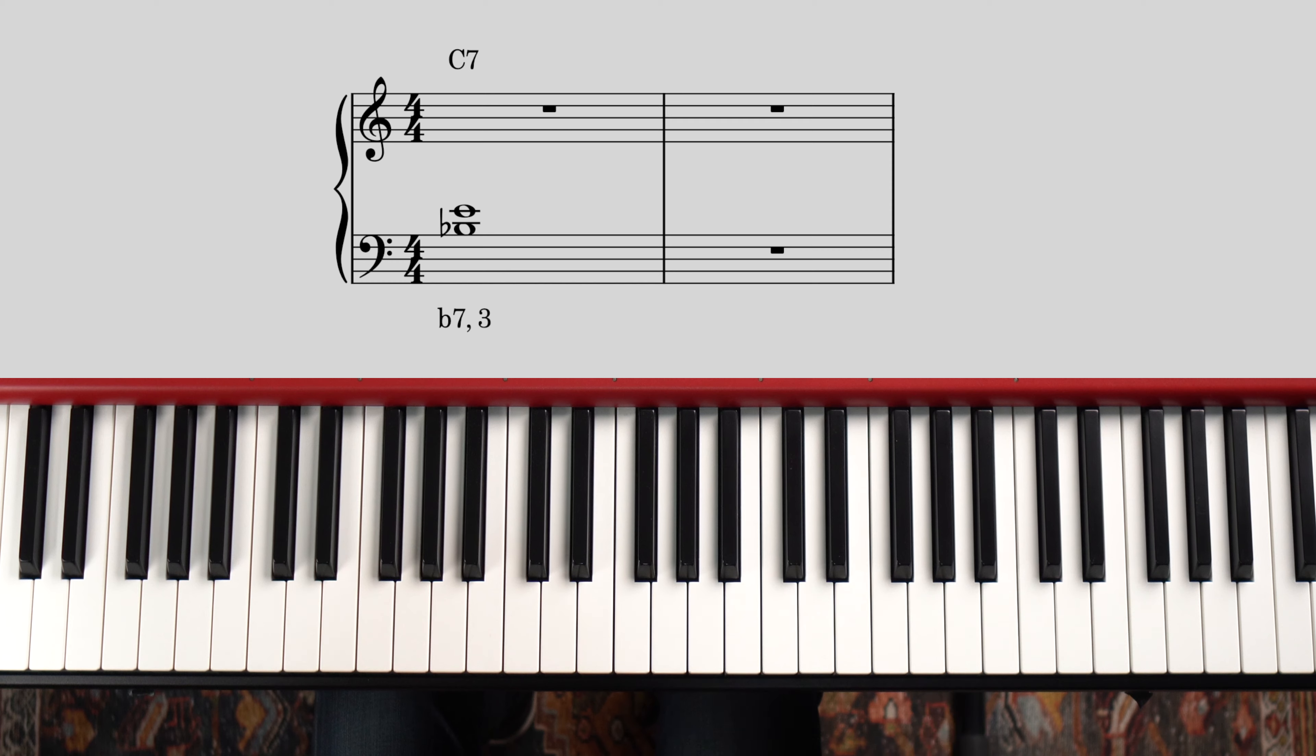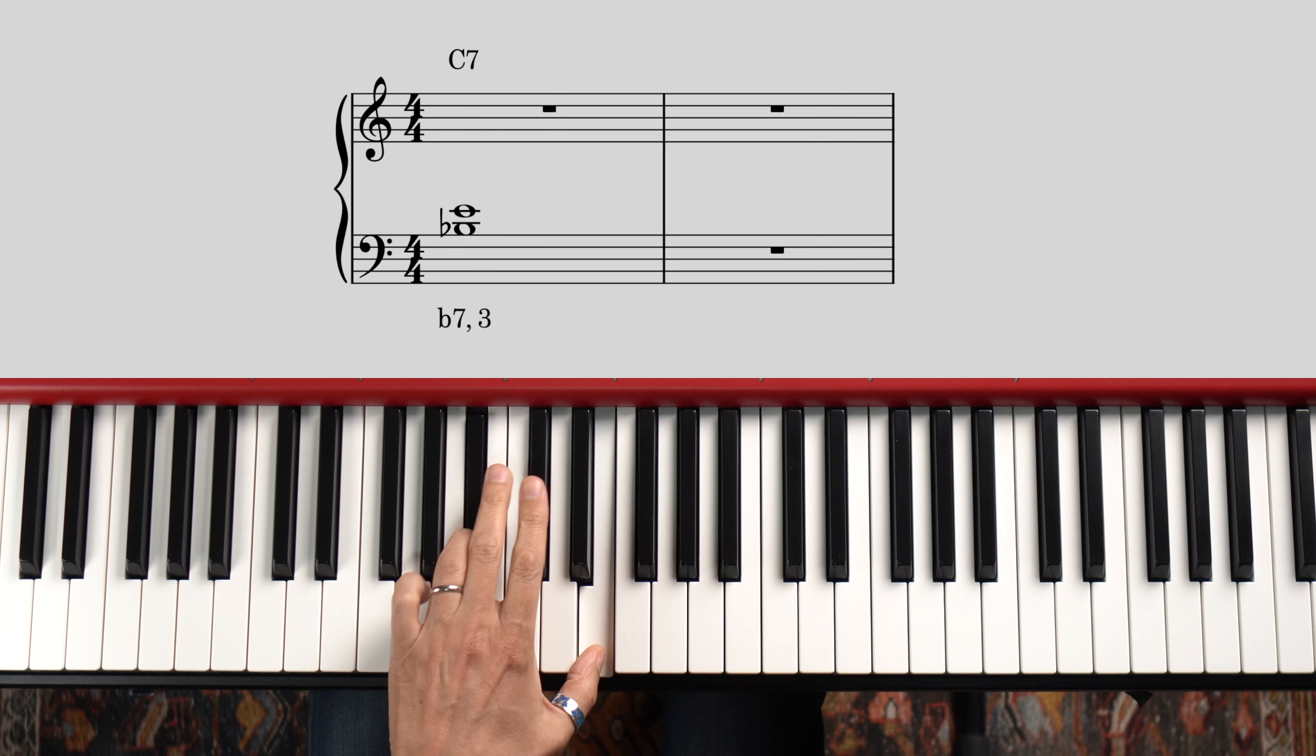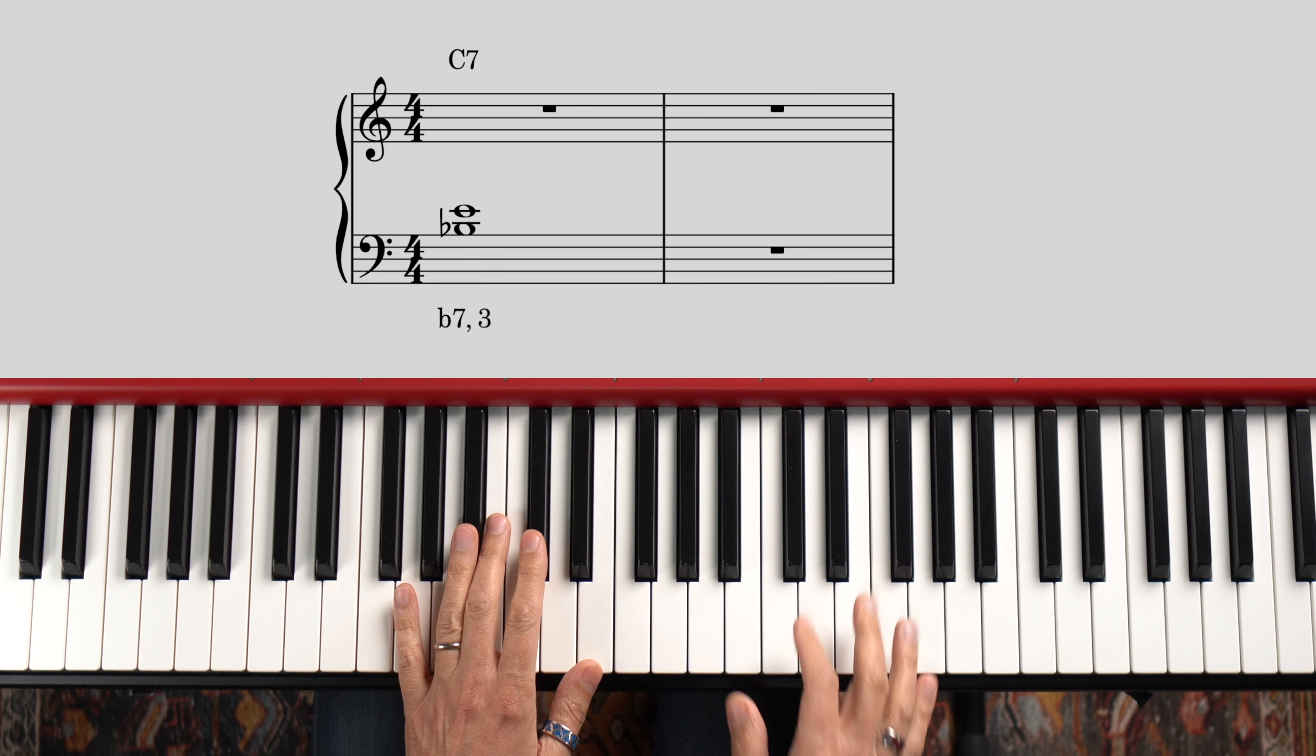And lastly, I can now apply the whole idea to a different set of voicings by flipping the guide tones. Instead of starting with a C7 chord that has the 3rd at the bottom, this is often called an A voicing, I'll start with the 7th at the bottom, this would then be called a B voicing. So here I got my guide tones in my left hand, 7 and 3. And in my right hand I'll play 13, 9 and flat 13.